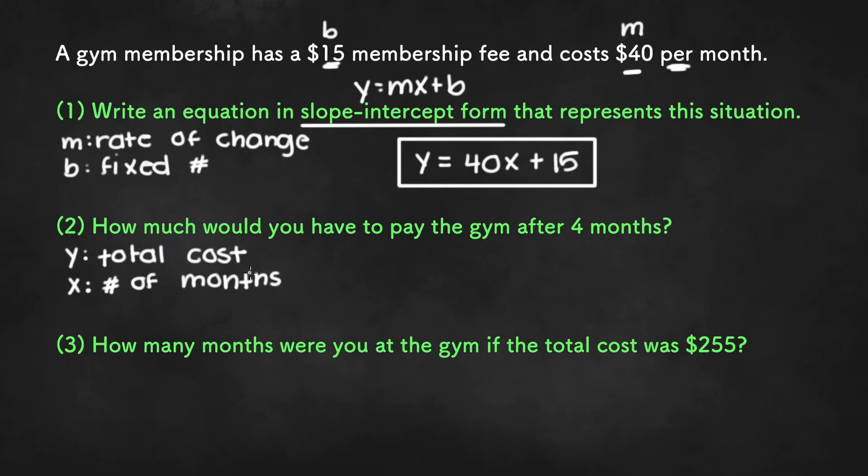So we are asked to find the total cost of the gym after four months. That means we are finding y when x equals 4. So let's plug in 4 for x in the equation and solve to get our y value. So if we plug it in, we get y equals 40 times 4 plus 15. So 40 times 4 is 160, and 160 plus 15 is 175. So you would have to pay the gym $175 if you were a member for four months.